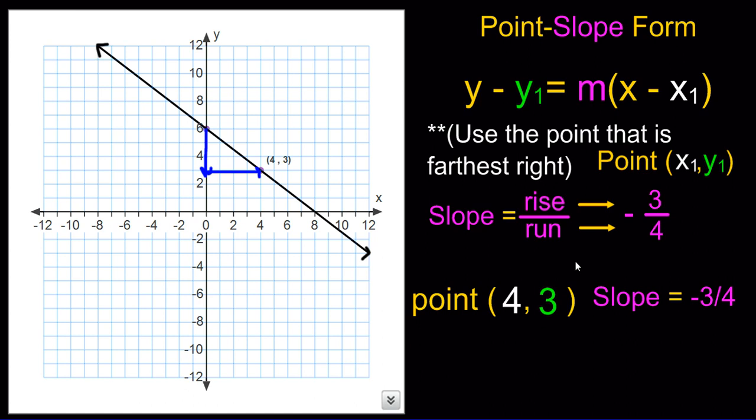Now it's a matter of simply writing it into point-slope form. So we write y minus, and we need to move our y1 coordinate here, equals the slope, negative 3 fourths, times x minus the x1 coordinate. And that's how you take a linear graph and rewrite it in point-slope form as an equation.